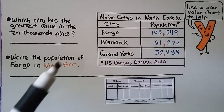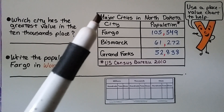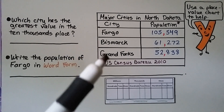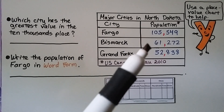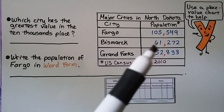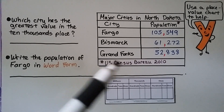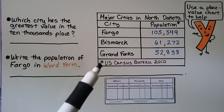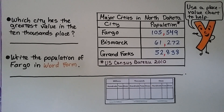Here we have a table titled 'Major Cities in North Dakota.' We have three cities — Fargo, Bismarck, and Grand Forks — with their populations listed. The data is from the U.S. Census Bureau, 2010. We can use a place value chart to help answer questions about these populations.